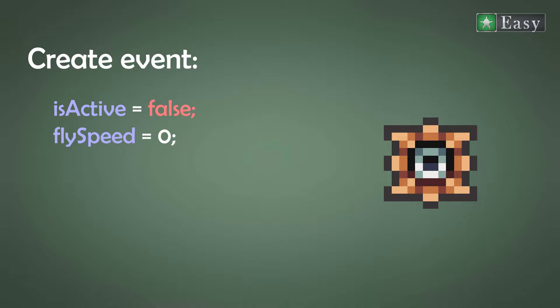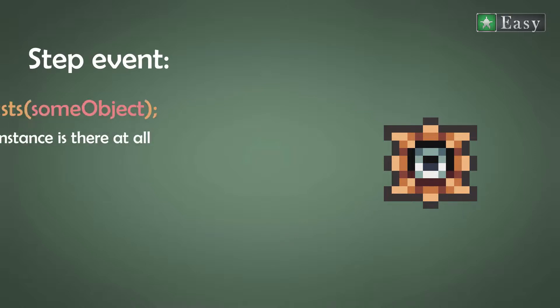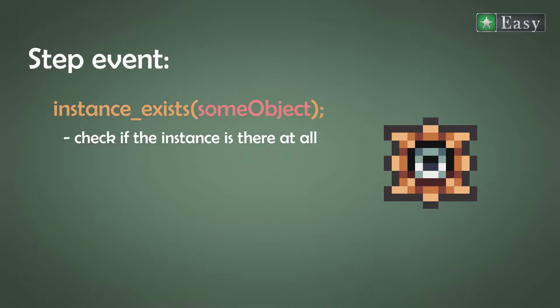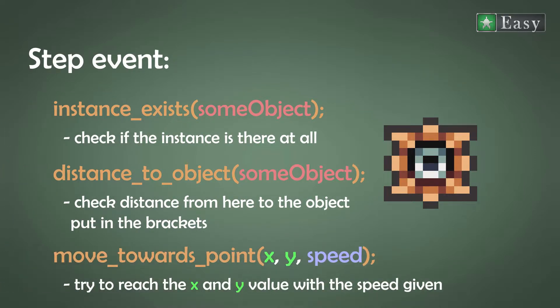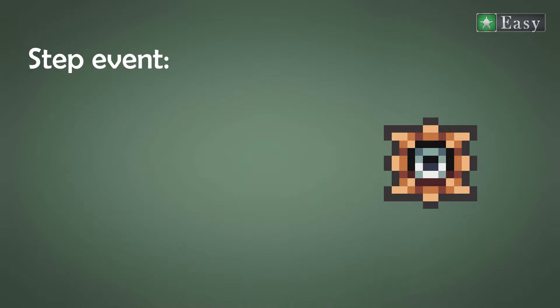We head to the step event and introduce three new inbuilt methods that will make the programming short and easy: instance_exists, distance_to_object, and move_towards_point. We will make a new region for the specific type of enemy — the flying one. If the enemy type is set to flying, we are constantly checking and changing two things: range and movement.